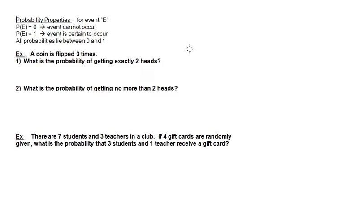I'd like to take a look at a few more probability applications, and there are some properties that will help us in doing the calculations. One fact is that all probabilities lie between 0 and 1, or in percentage terms, between 0 and 100%. If the probability of an event is equal to 0, that means there is 0 chance of it happening and the event cannot occur. If the probability of an event is equal to 1, or 100%, then the event is certain to occur.